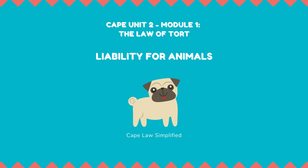Fourth, knowledge of an animal's vicious propensity will be imputed to a defendant where it is acquired by someone to whom the defendant delegated full custody or control of the animal. Other persons such as a spouse, keeper, or servant in charge of the premises where the animal is kept will be presumed to have communicated the knowledge to the keeper. Fifth, for the purpose of a scienter action, it is immaterial where the animal's attack took place — whether on the claimant's land, the defendant's land, a third party's land, or a public highway. This was from the case of Aziz v Singh.